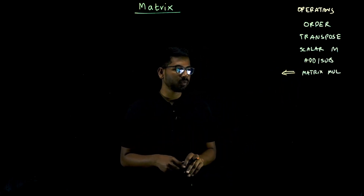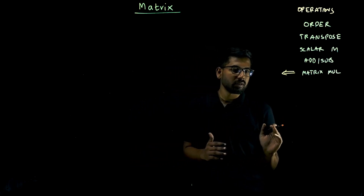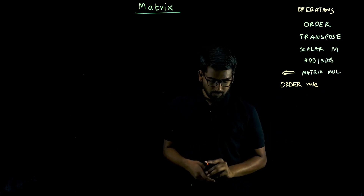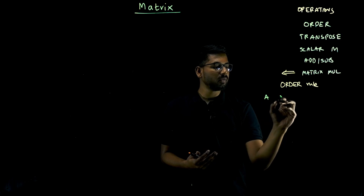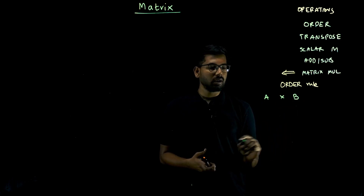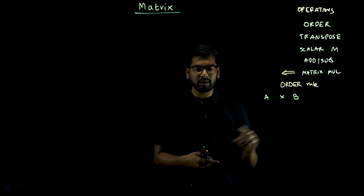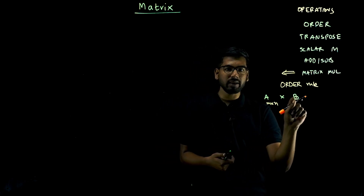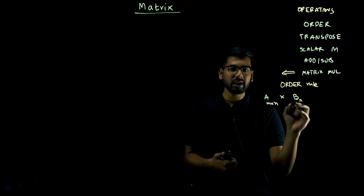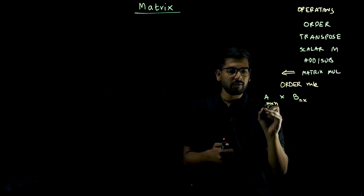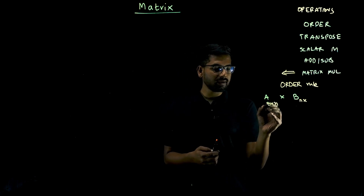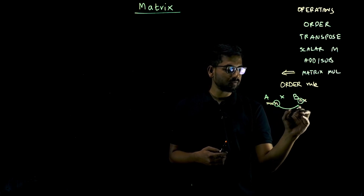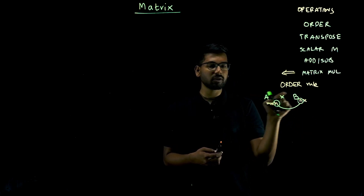For multiplication between two matrices, there is a rule for the order of the matrices. If you want to multiply matrix A with matrix B, and if A has order m cross n, then B's order should begin with n — that is, n cross something. So A has m rows and n columns, then B must have n rows. The number of columns in A should be equal to the number of rows in B.